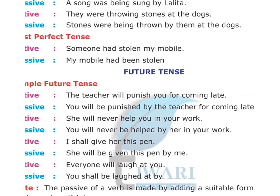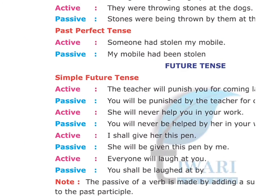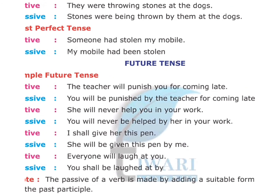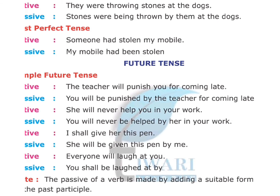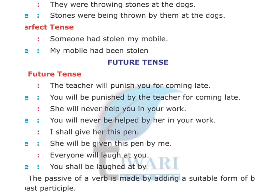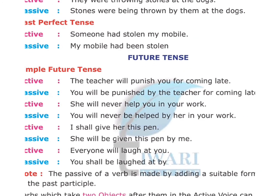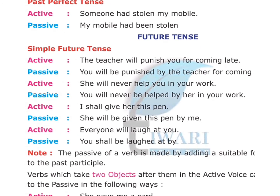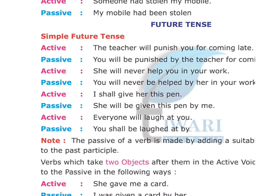Simple future tense. Active: 'The teacher will punish you for coming late.' Passive: 'You will be punished by the teacher for coming late.' In simple future tense, we use will be followed by the verb in third form. More examples — Active: 'She will never help you in your work.' Passive: 'You will never be helped by her in your work.' Active: 'I shall give her this pen.' Passive: 'She will be given this pen by me.' Active: 'Everyone will laugh at you.' Passive: 'You shall be laughed at by everyone.'